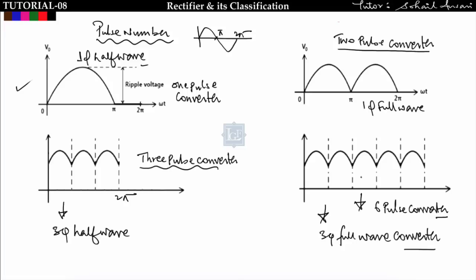As the number of pulses increases, the ripple in output voltage decreases. In a one-pulse or two-pulse converter the ripple can go from zero to Vm, but in a three-pulse converter the ripple is smaller. As ripple decreases, harmonic content decreases, the DC component increases, and the voltage ripple factor is reduced. In a six-pulse converter the ripple is even less.